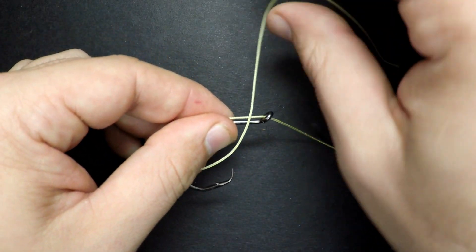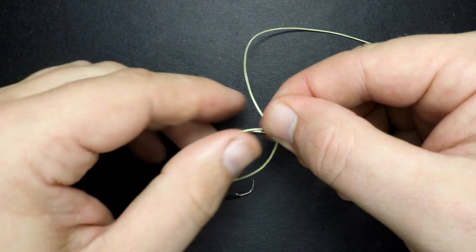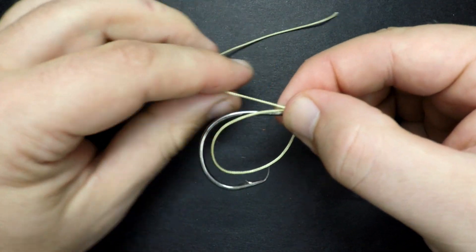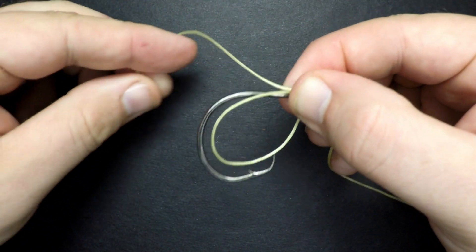Next, cross the shank and the main line with your tag end close to the eye. This will form a large loop. Pinch the loop to the shank to keep it in place.